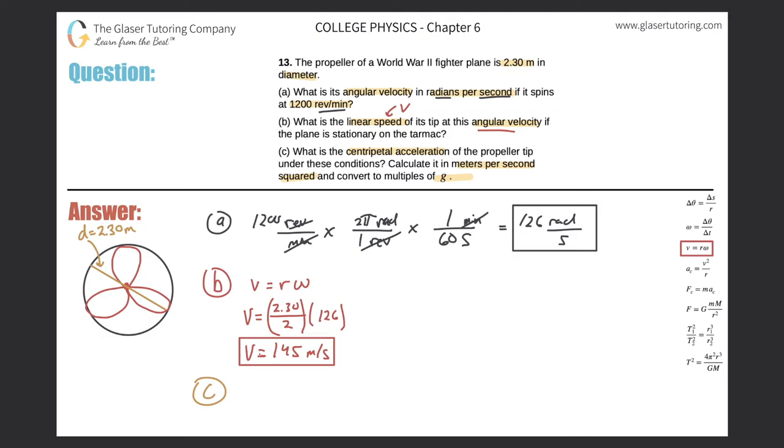Now I need to figure out what formulas I know that have centripetal acceleration in them and relate them to either angular velocity or tangential velocity. I have the equation right here, and it relates nicely to the tangential velocity. Centripetal acceleration is equal to the tangential velocity squared divided by the radius.